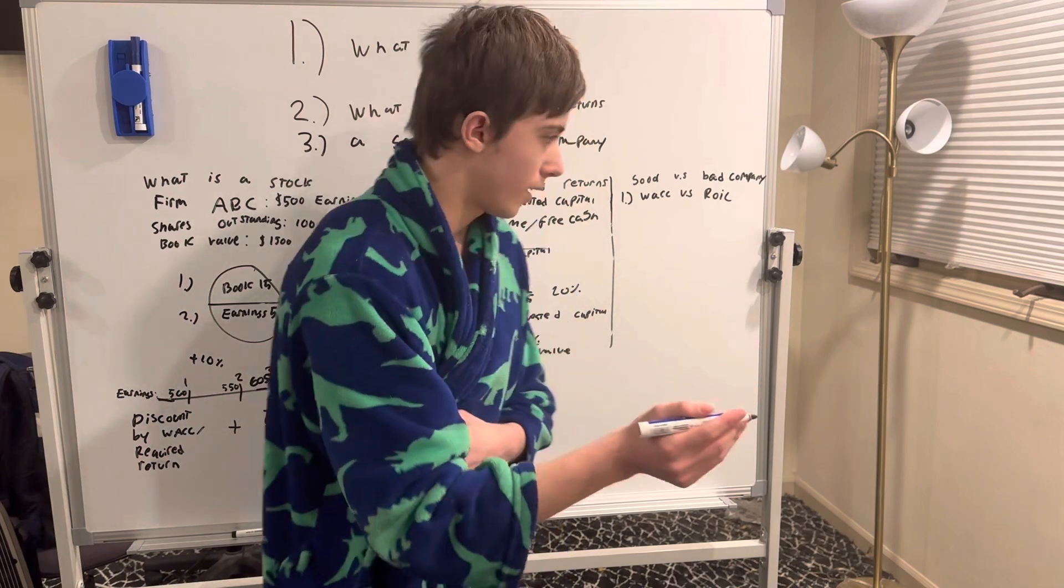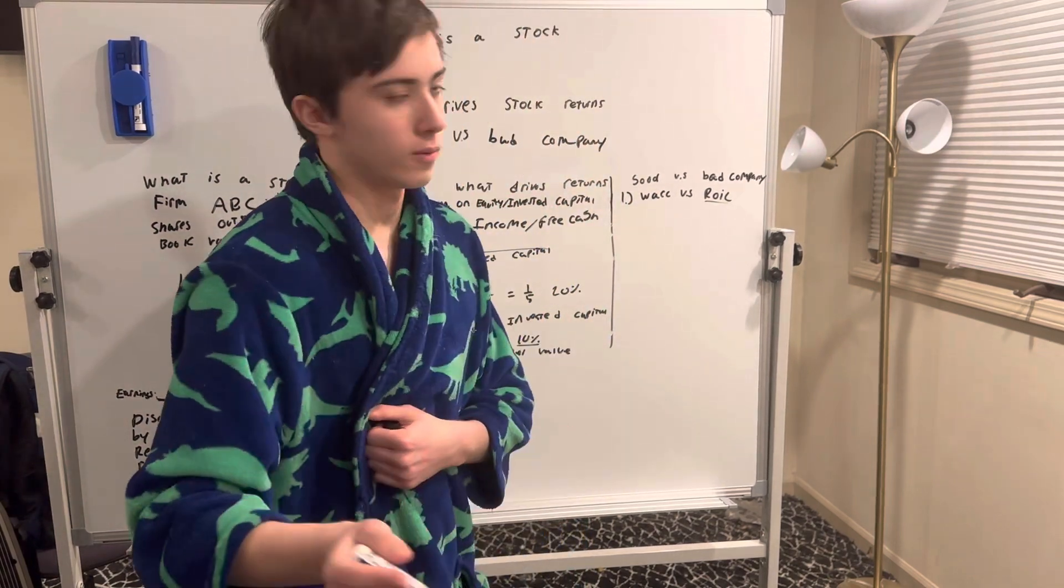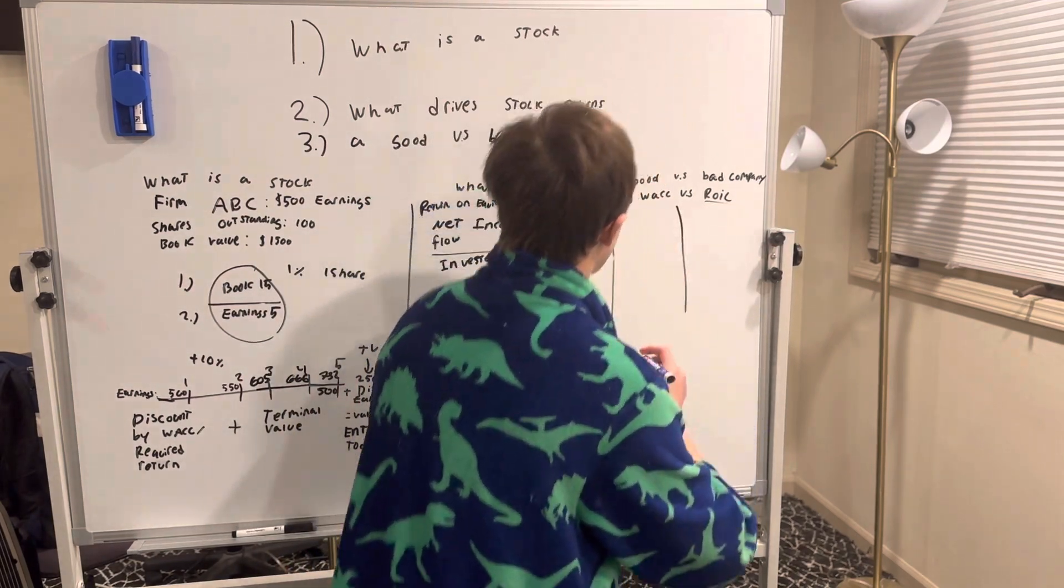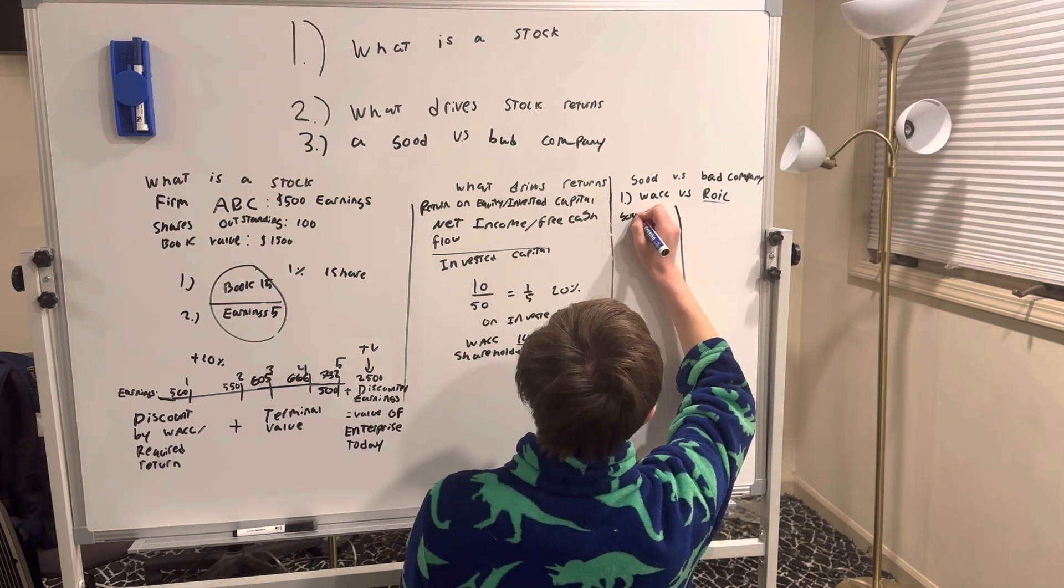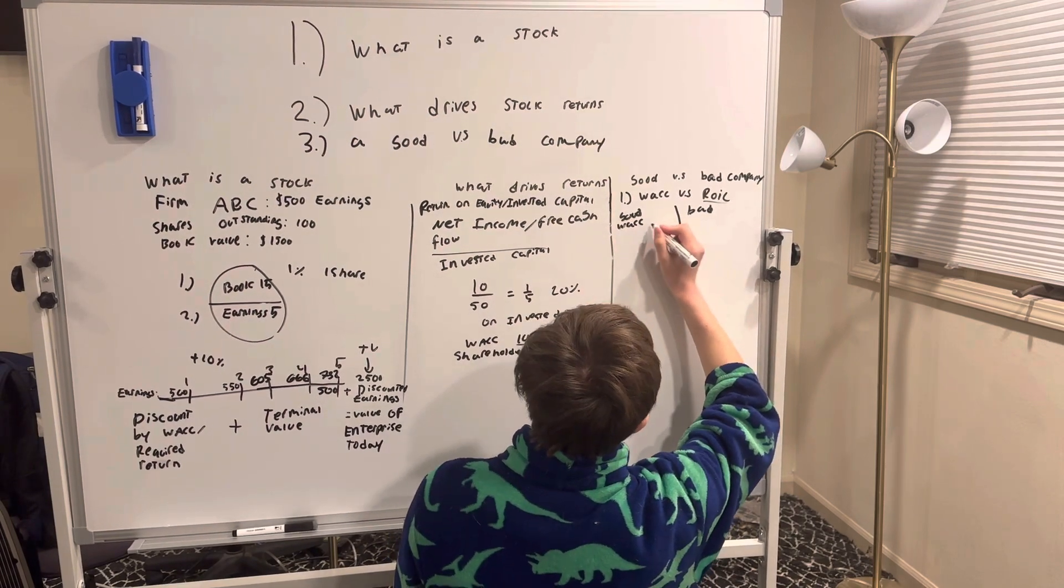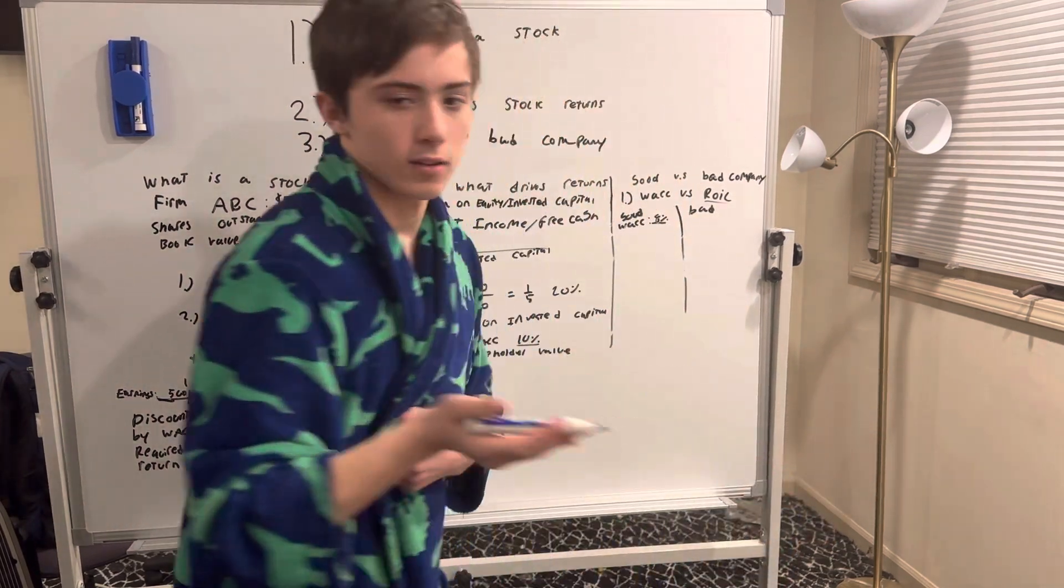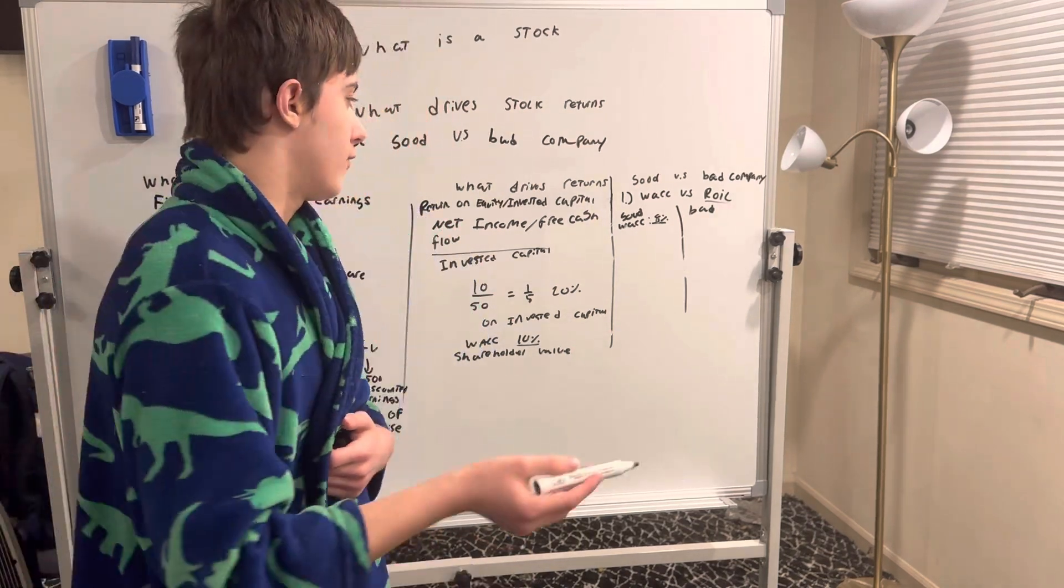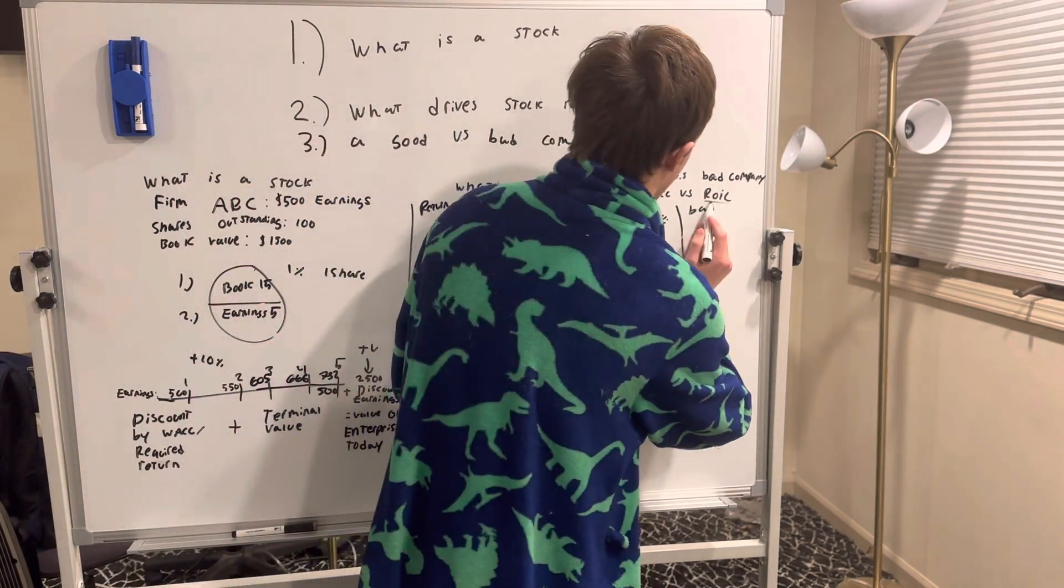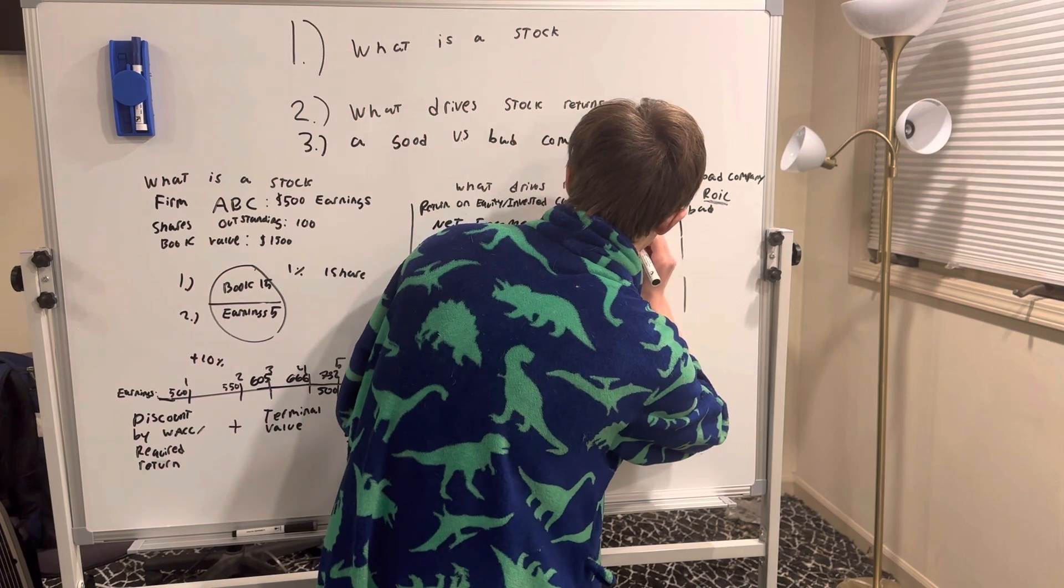That brings us into the next point, good versus bad company. So a good company will have a high return on invested capital. I think return on invested capital is more important than return on equity because it factors in debt, which is a main thing. A good company versus a bad company. A good company might have a WACC of, let's say 8%. Now, a high WACC isn't necessarily a bad thing. WACC can be calculated in a lot of ways. If a security is very volatile it can cause a higher WACC. The main thing is what is the return on invested capital or equity.